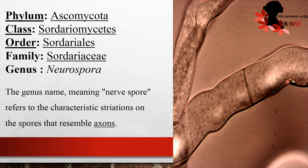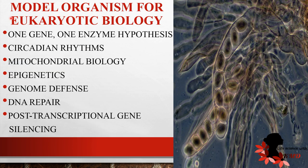Neurospora has well-branched, multicellular, septate mycelium with multi-nucleate and multi-pigmented cells. It is used as a model organism for eukaryotic biology, such as the one gene one enzyme hypothesis, circadian rhythms, mitochondrial biology, epigenetics, genome defense, DNA repair, and post-transcriptional gene silencing.